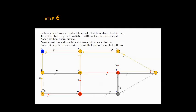Step 6: Red arrows point to nodes reachable from nodes that already have a final distance. The distance to F is equal to 26, G is equal to 23, and H is equal to 49. Notice that the distance to F has changed. Node G has the minimum distance. Any other path to G visits another red node and will be longer than 23. Node G will be colored orange to indicate that 23 is the length of the shortest path to G.